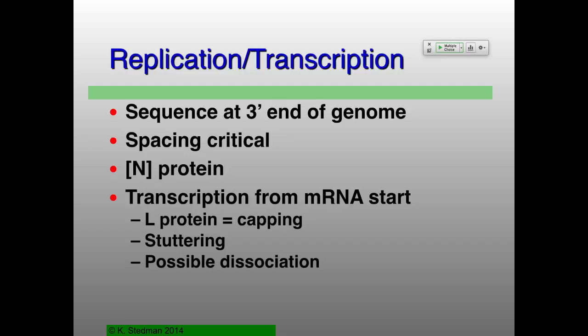In other cases, it will stay on and restart a new messenger RNA. You also have this stuttering process — stuttering is when you've got this stretch of U residues on your template. You make a whole bunch of A's, a poly-A tail, which is what you need for translation purposes. But for replication, the really main factor has to do with the N protein, the nucleocapsid protein, and the concentration of this N protein.